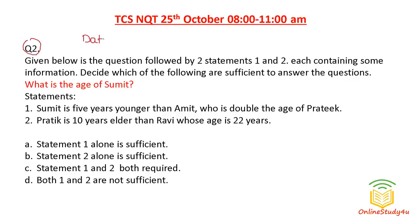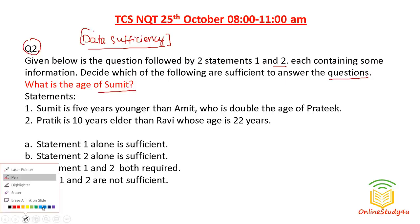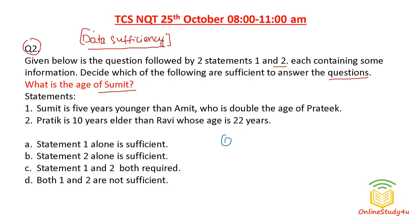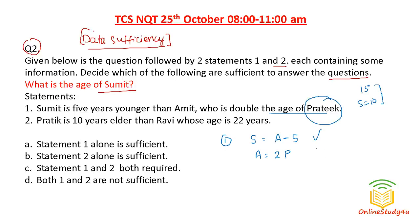Question number two is a data sufficiency problem. Given below is a question followed by two statements — each containing some information. Decide which statements are sufficient to answer: what is the age of Sumit? Statement one: Sumit is five years younger than Amit, so Sumit's age equals Amit's age minus five. Amit is double the age of Prateek. We have multiple unknowns, so from statement one alone we cannot determine Sumit's age.